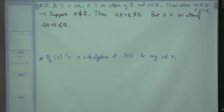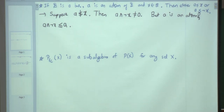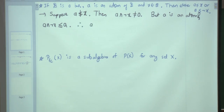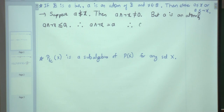Therefore, since A ∧ ¬X is non-zero and below A, and below any atom there are only two elements — either 0 or that element itself — we conclude A ∧ ¬X = A, and therefore A ≤ ¬X. Done. This is a very simple problem to solve.